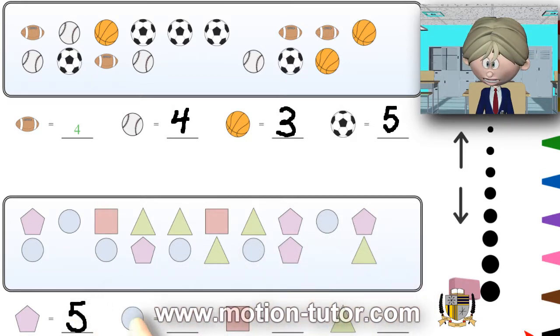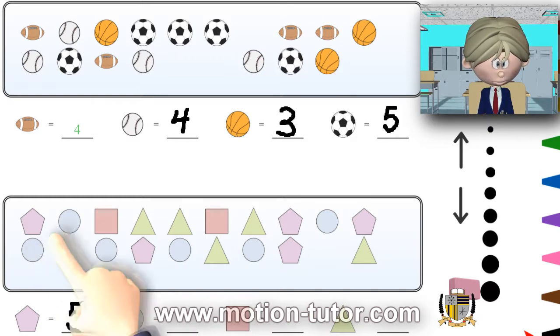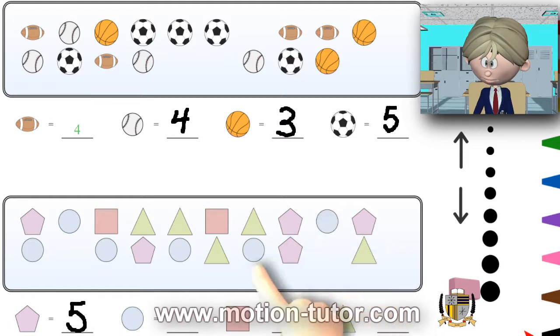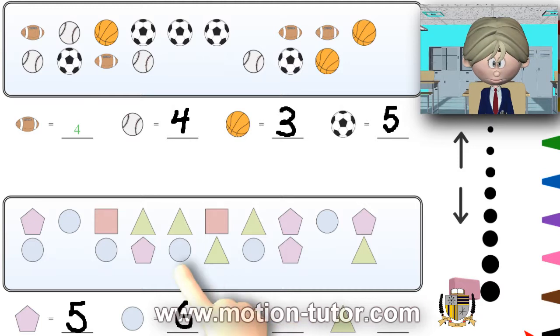How many circles? One, two, three, four, five, six circles. How many squares? I see one, two.